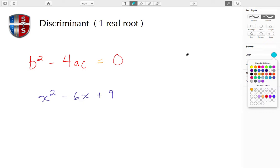Here we have the expression for the discriminant: b² - 4ac. If that resolves to a value of zero, then we meet the criteria for one real root.